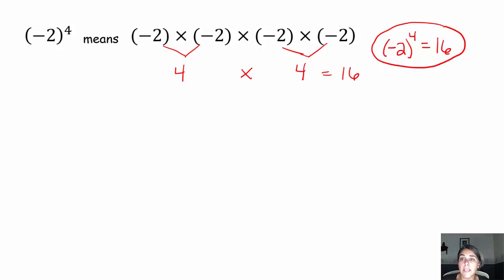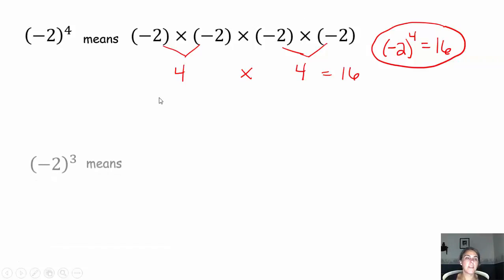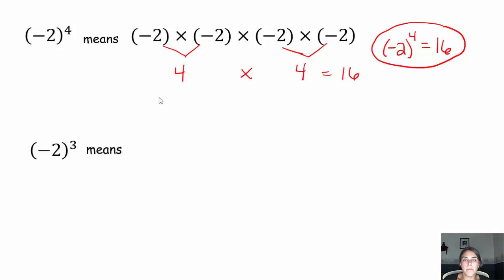Sometimes if you start with a negative base and raise it to a certain power — like 4 — you'll come up with a positive answer. I wonder if you always get a positive answer when you raise a negative base to a power. To decide that, try this one: negative 2 is the base, 3 is the exponent. What does negative 2 to the third mean? Pause the video, try it out, and come on back.